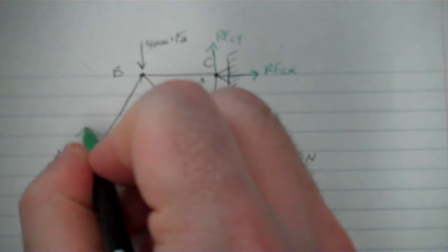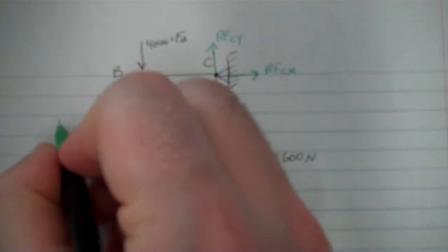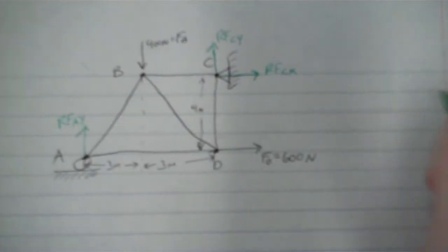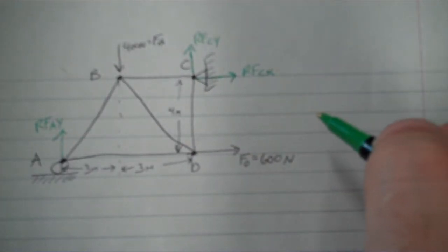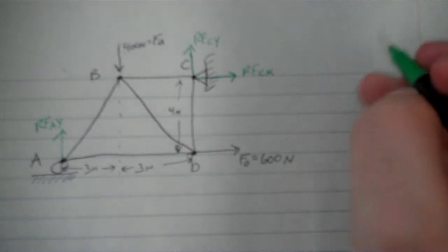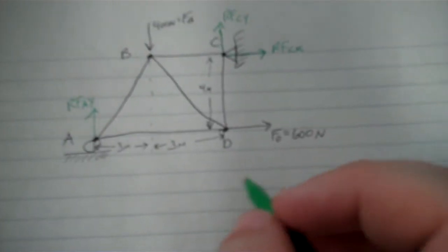Same thing for A over here. It's a roller, so I'm only going to get one reaction force, RFA in the Y direction. So that's all my forces on the whole structure, on the structure as a whole. Now if I want to find the reaction forces, which is what this video will do, I need three equilibrium equations.